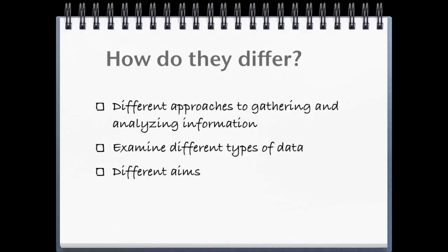They differ in some things. They have different approaches to gathering and analyzing information, they examine different types of data, and they have different aims. When we talk about the approaches and types of data, quantitative looks at numbers, while qualitative may look at words, pictures, or interviews.